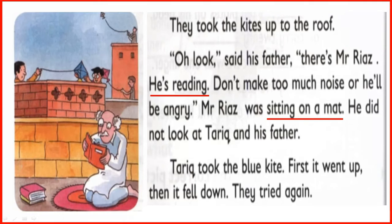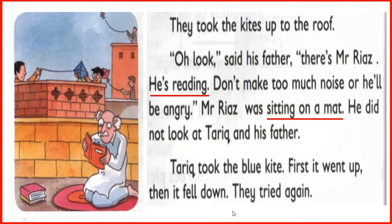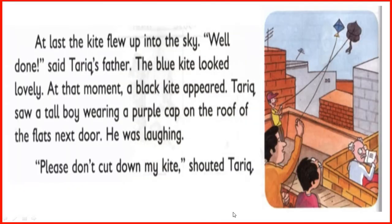Where was Mr. Riyaz sitting? He was sitting on a mat. Did Mr. Riyaz look at Tariq and his father? No, he did not. Tariq flew the blue kite first, and after flying, the kite fell down. They tried again.